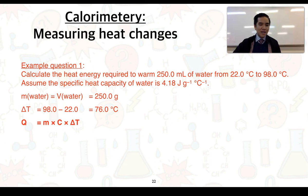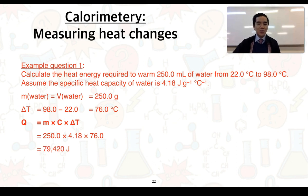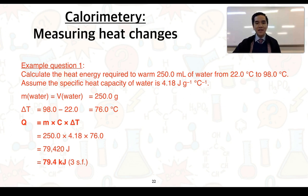From here we plug the values into our formula for Q. Substituting in our values — including the specific heat capacity — and putting them into our calculator, we get an answer of 79,520 joules. Converting to more appropriate units gives 79.4 kilojoules expressed to three significant figures.